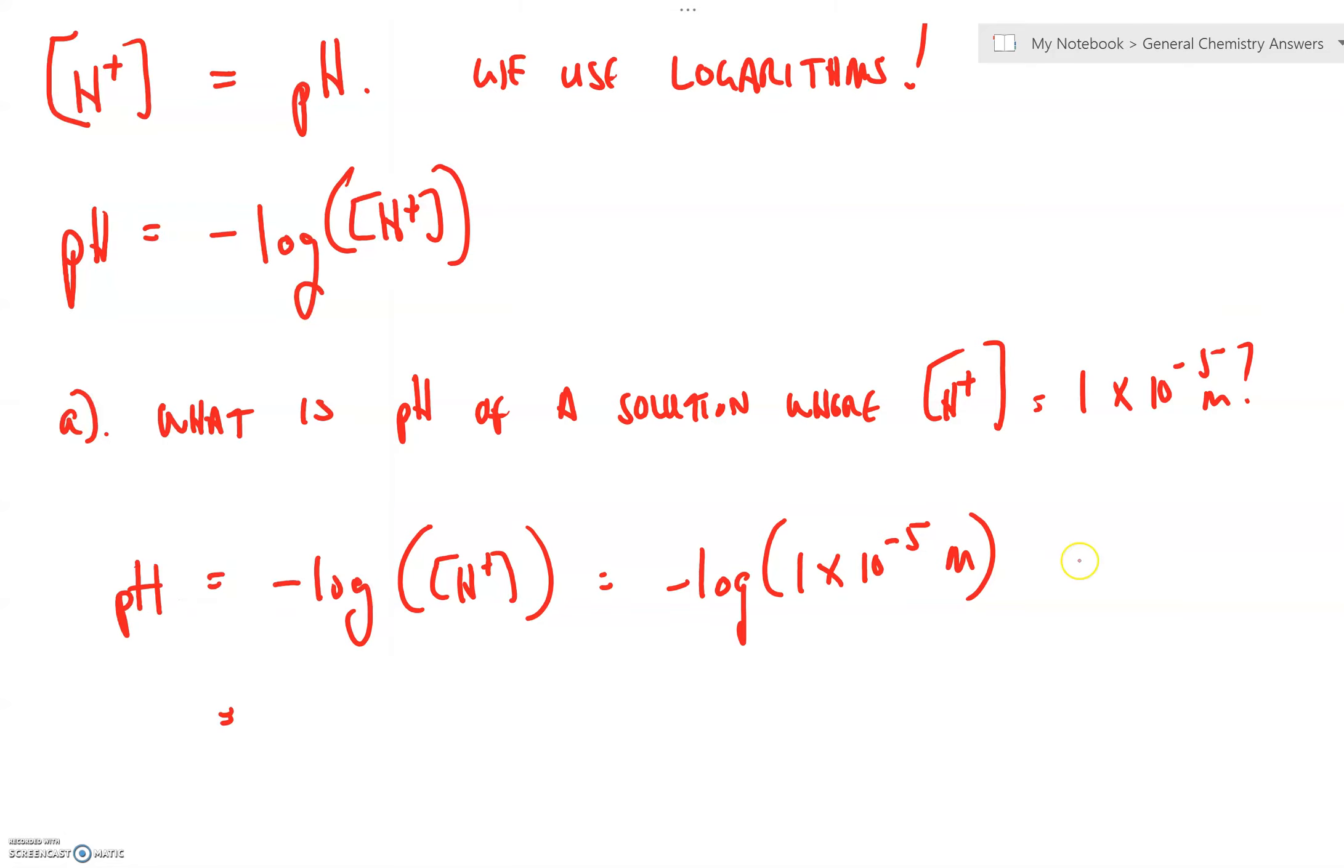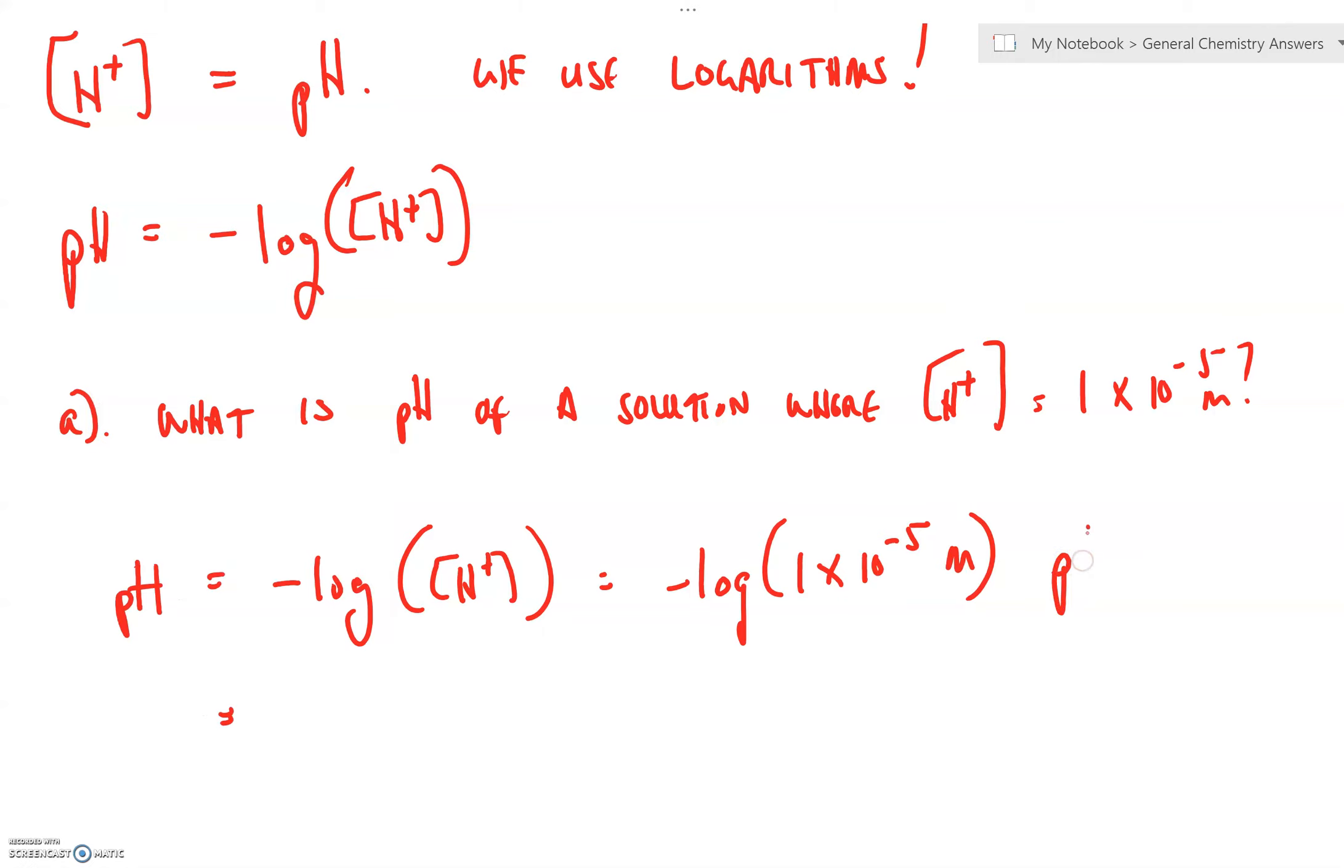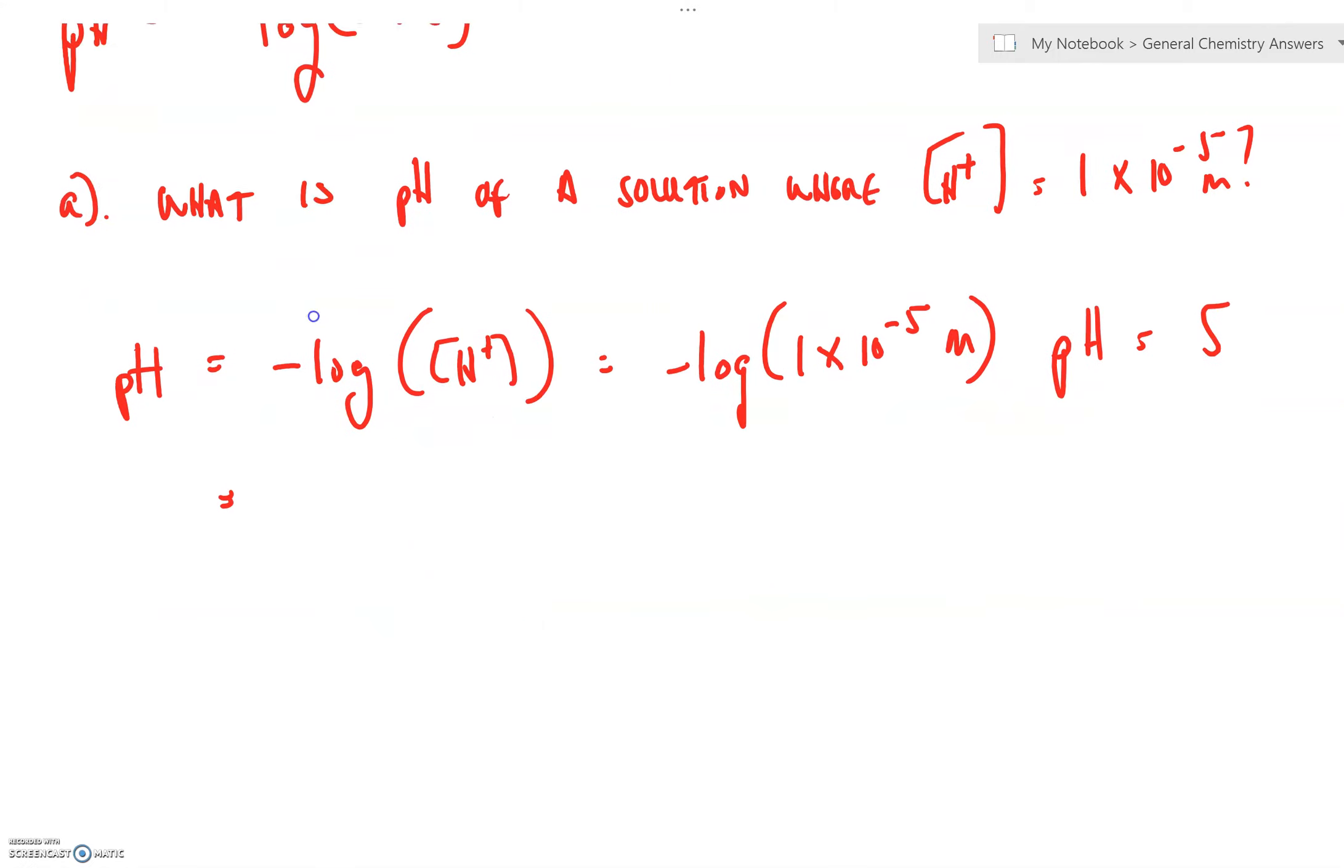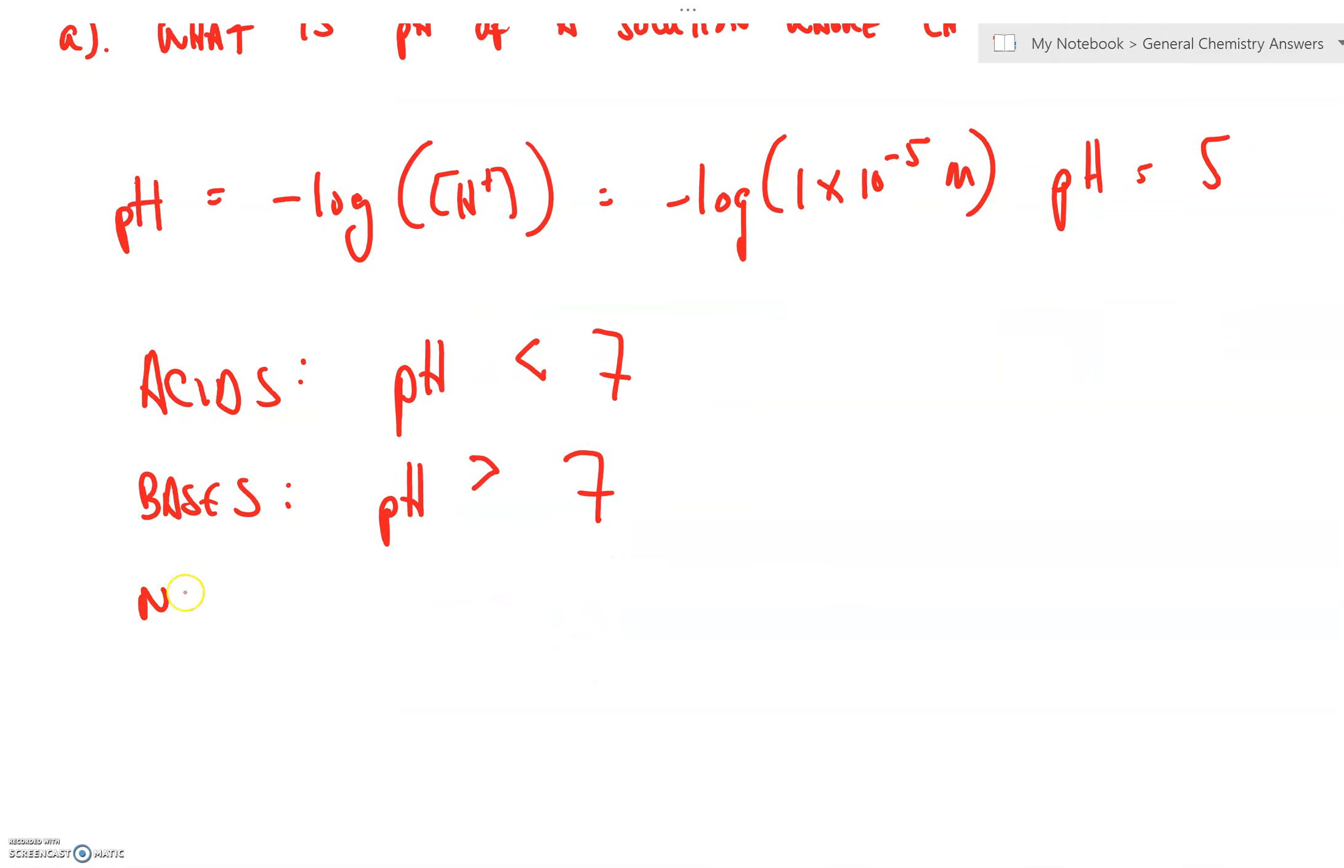This has a pH of 5. Now, I know that you have all had, in a junior high-level science course, they tell you that acids are substances that have a pH that is less than 7, and that bases have a pH that is greater than 7, and that solutions that are what we call neutral have a pH that equals 7. So, that would tell us that this is clearly an acid.